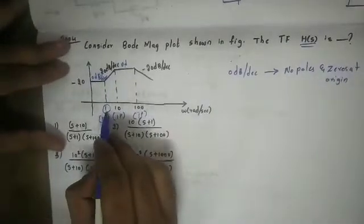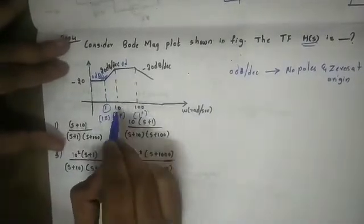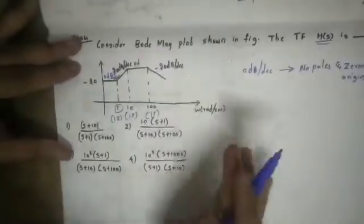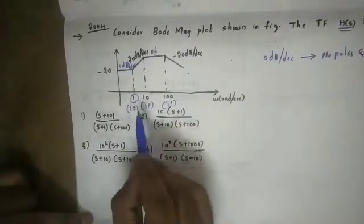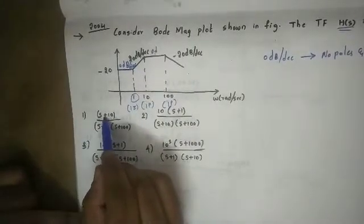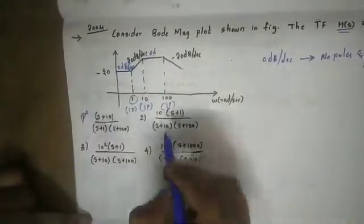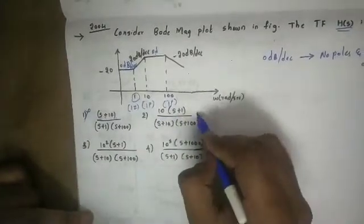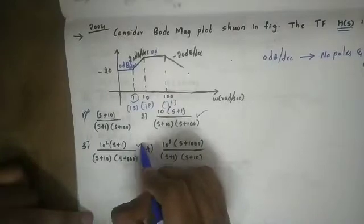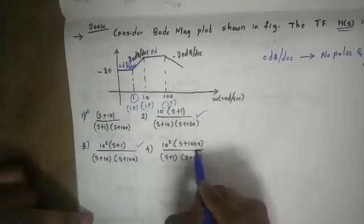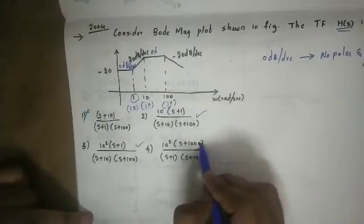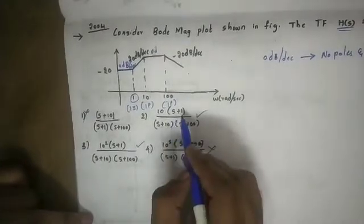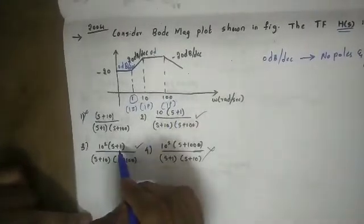From 1 to 0, the next corner frequency is 10, and 100 to 0. So 1-1-1. Verifying the options: 10 to 0 is 0, so the first option is eliminated. 1 to 0 is 0, so this is a possibility. 1 to 0 is 0, so this is also a possibility, and 100 to 0 as well. So the options are either the second or third.